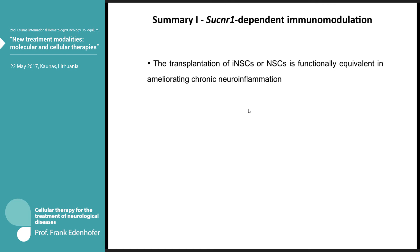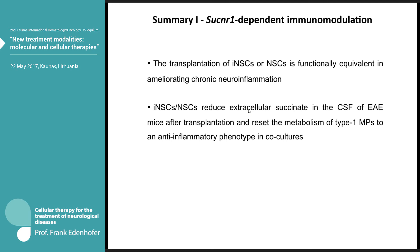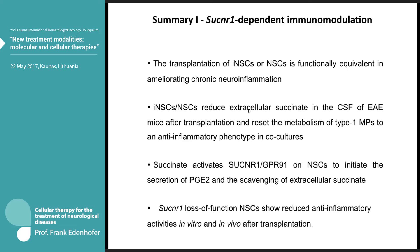To summarize: the transplantation of INSCs or NSCs is functionally equivalent in ameliorating chronic inflammation. These neural stem cells reduce extracellular succinate in the CSF of EAE mice after transplantation and reset the metabolism of type 1 macrophages to an anti-inflammatory phenotype in co-culture. Succinate activates the receptor on NSCs to initiate secretion of prostaglandin — the next step in the mechanism — and also scavenges extracellular succinate. Loss of function of the succinate receptor in NSCs shows reduced anti-inflammatory activity both in vitro and in vivo after transplantation.